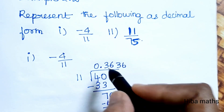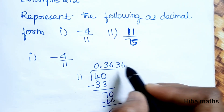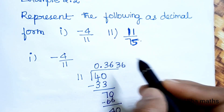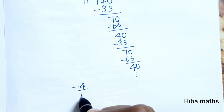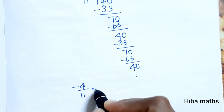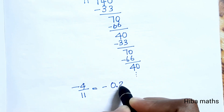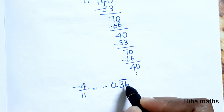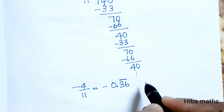So the answer is 0.363636... This is a repeating decimal, shown by placing a bar over the repeating digits. Minus 4 by 11 is equal to minus 0.36 repeating (bar over 36).